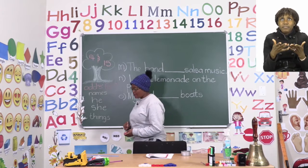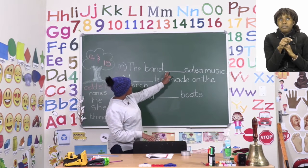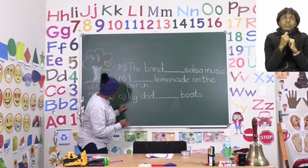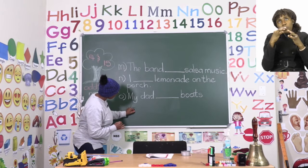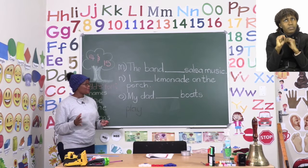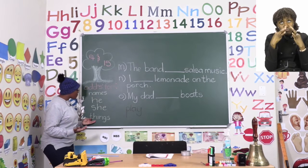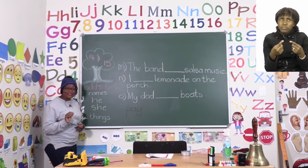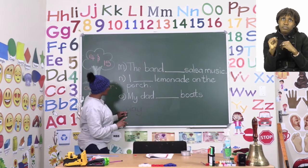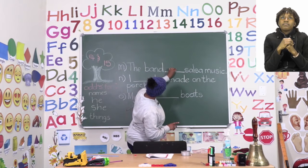Let's see if this rule is going to help us. Number M says: the band dash salsa music. The word we need to change is the word 'play.' Now we have to figure out: do we add an S or not? Well, it says 'the band,' and a band is something. So that falls under things, which means that the word 'play' changes to 'plays.' The band plays salsa music. If you got that one correct, well done.